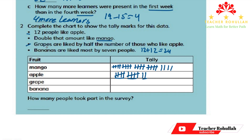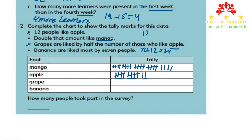The third point says grapes are liked by half the number of those who liked apple. How many people liked apple? 12. So half of 12 is 6 — if we divide 12 by 2 we get 6. So 6 people liked grapes. To show it, we use tally marks: 5, then one more mark to show 6.